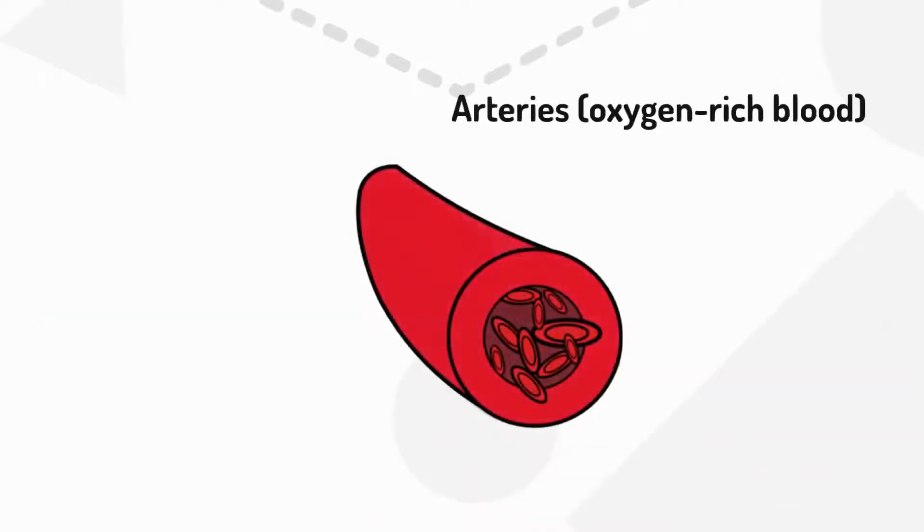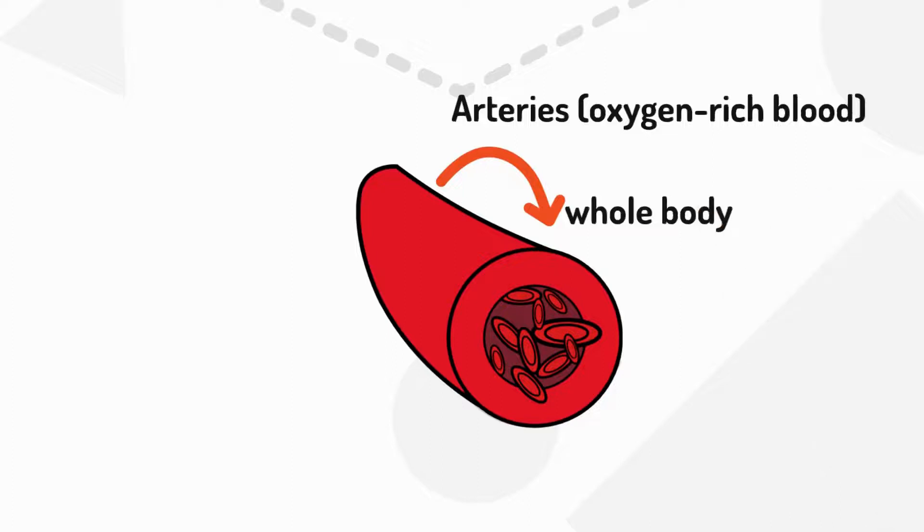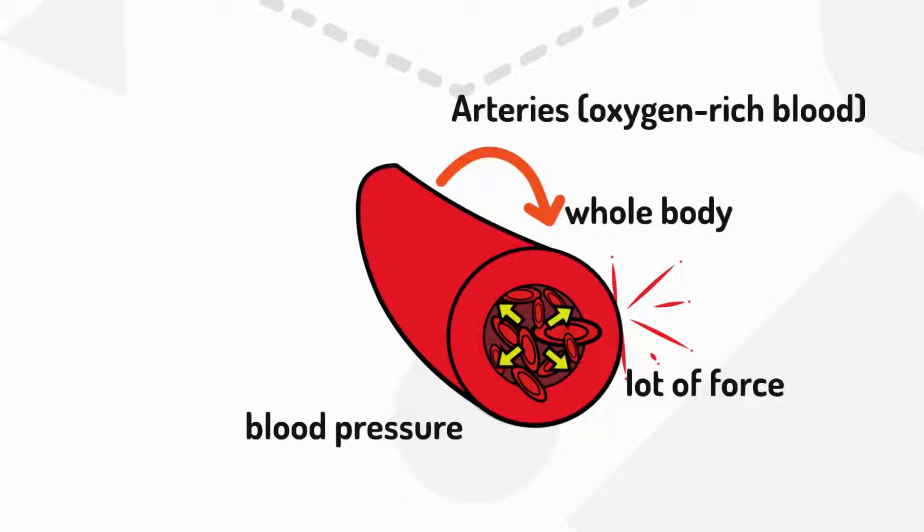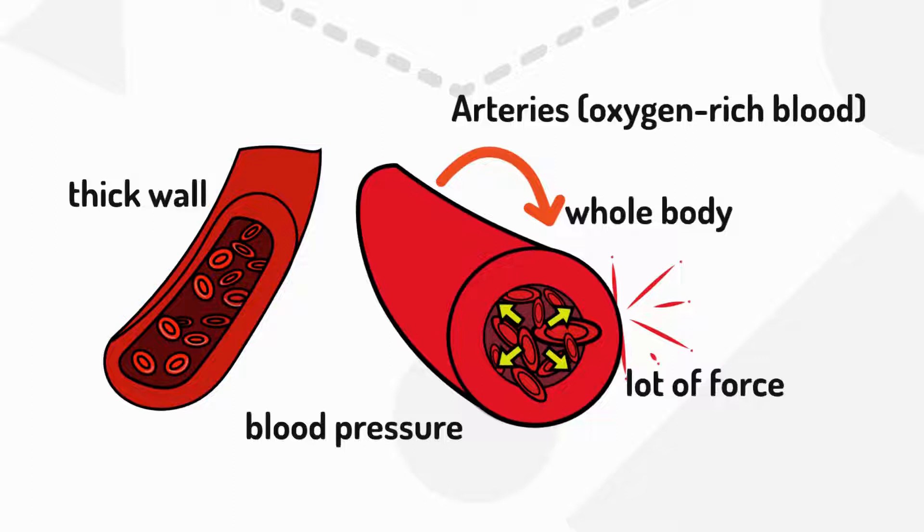Arteries carry oxygen-rich blood, which must reach the whole body. Therefore, the heart must pump this blood with a lot of force. The force of the blood pushing against the artery wall is called blood pressure. Arteries have thick walls to withstand this pressure.